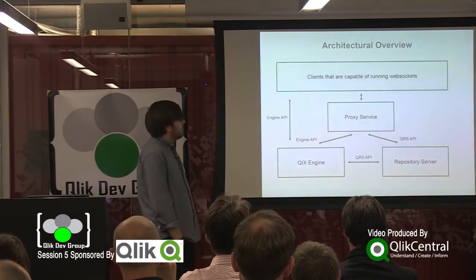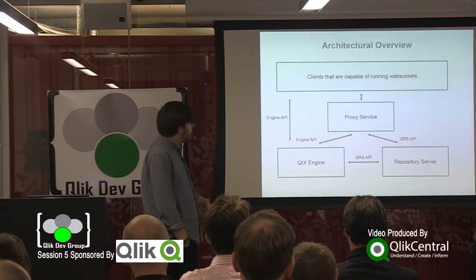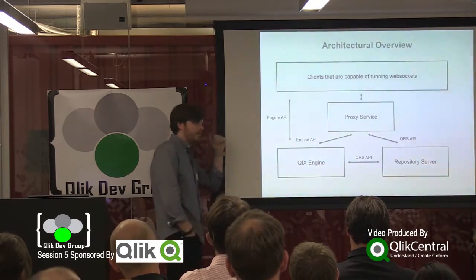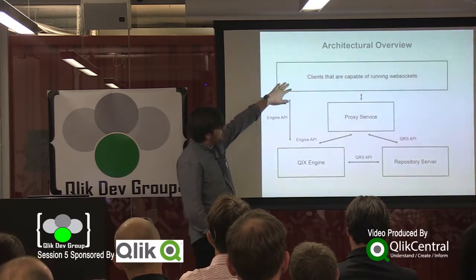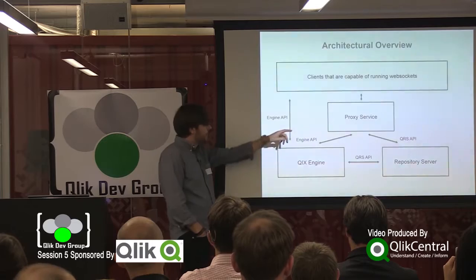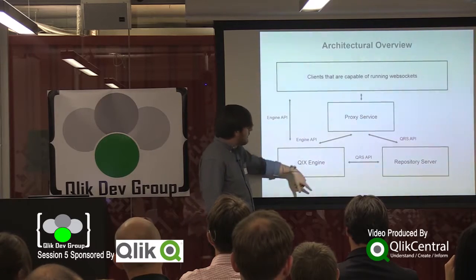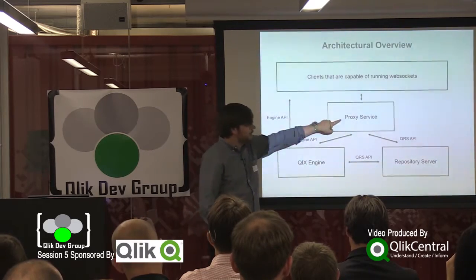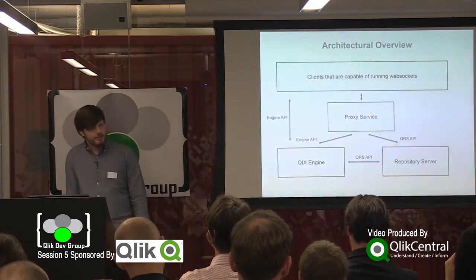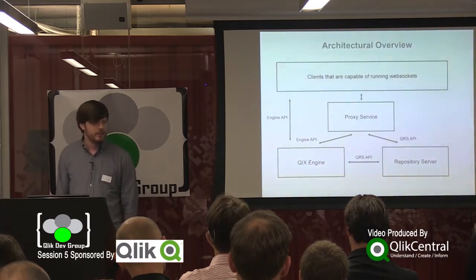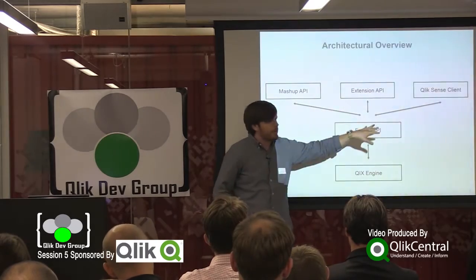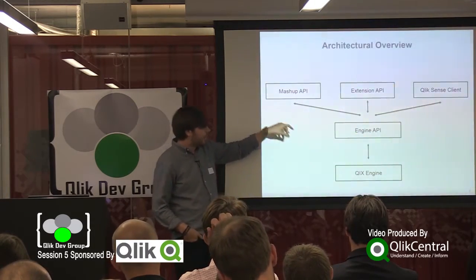Just a short recap on Qlik Sense. You have an engine component, you have the repositories, the QRS, you have a proxy. People are coming in — that can be the Qlik Sense client or something else — it talks to the proxy, which in turn talks to the engine API within the Qlik Sense engine. You can of course bypass the proxy and talk directly with the engine, which is useful for embedded software or IoT. If you work with the Mashup API, the extension API, or the Qlik Sense client, you are using the engine API.